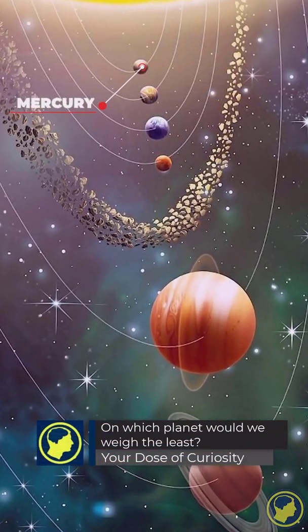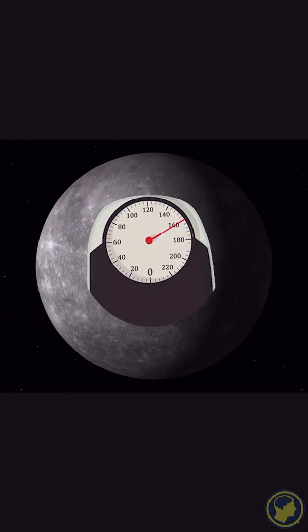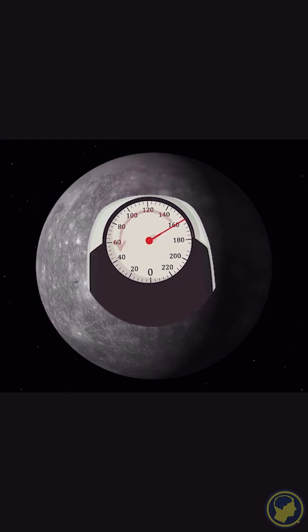Mercury is the smallest planet in the solar system. That may make you think that humans would weigh less on Mercury than the other seven planets. Not true.